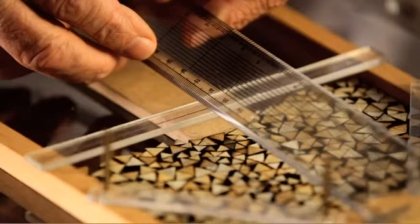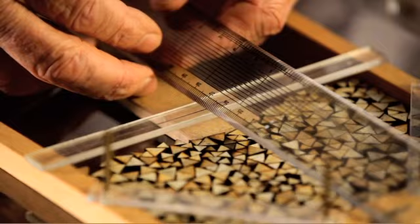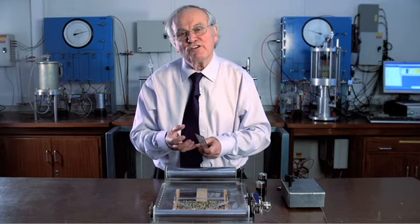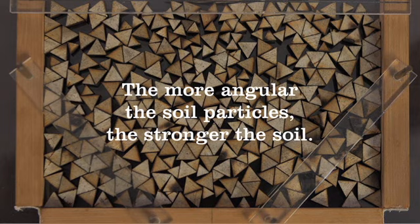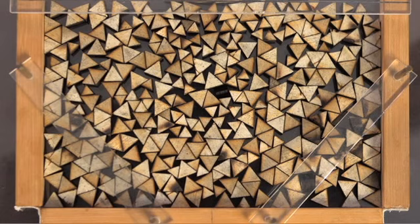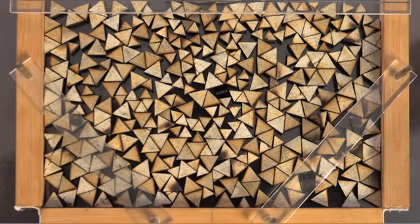Here we see it settling, and we'll measure what the penetration is. We see that the penetration is 12 millimetres, which is a lot less than for the circular particles. So the lesson from this demonstration is: the more angular the soil particles, the stronger the soil.